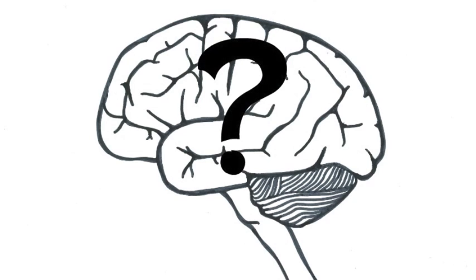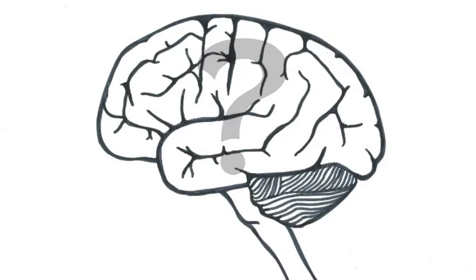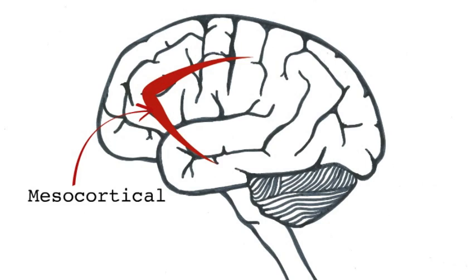We don't know everything about what causes schizophrenia, but it's thought to involve too much sensitivity to dopamine in two parts of the brain, the mesocortical pathway and the mesolimbic pathway.